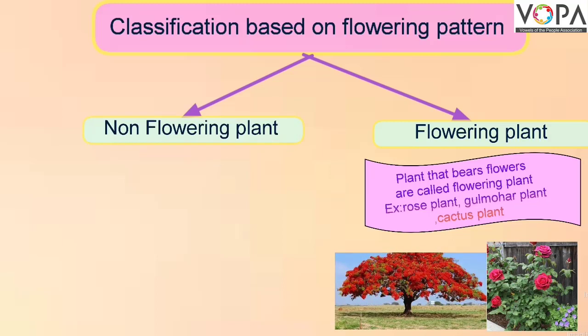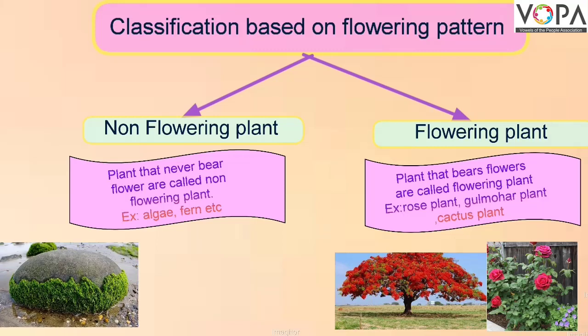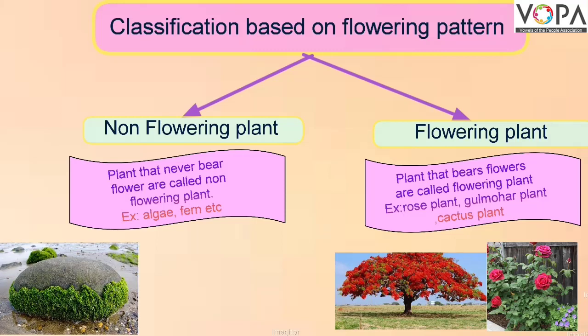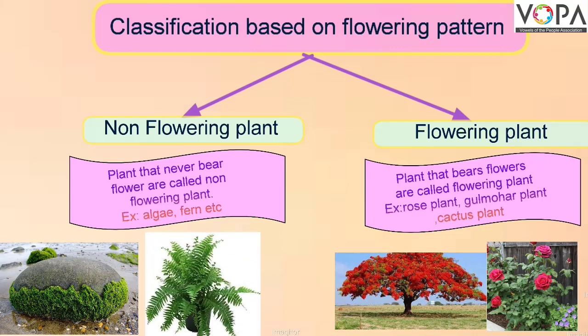Non-flowering plants: Plants that never bear flowers are called non-flowering plants. For example: algae, fern, moss, etc.